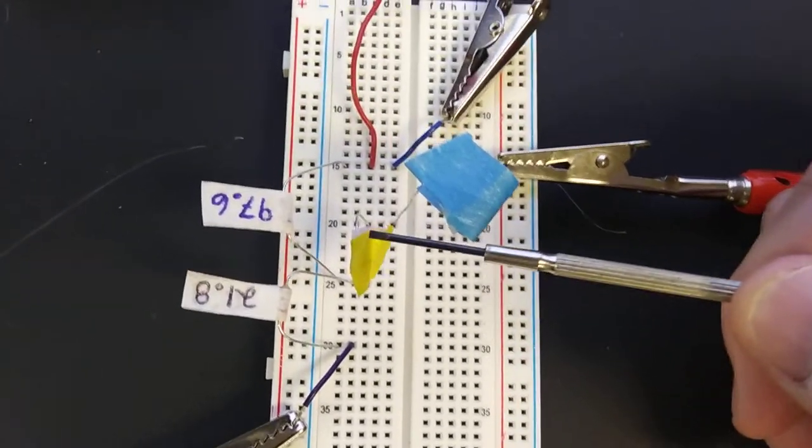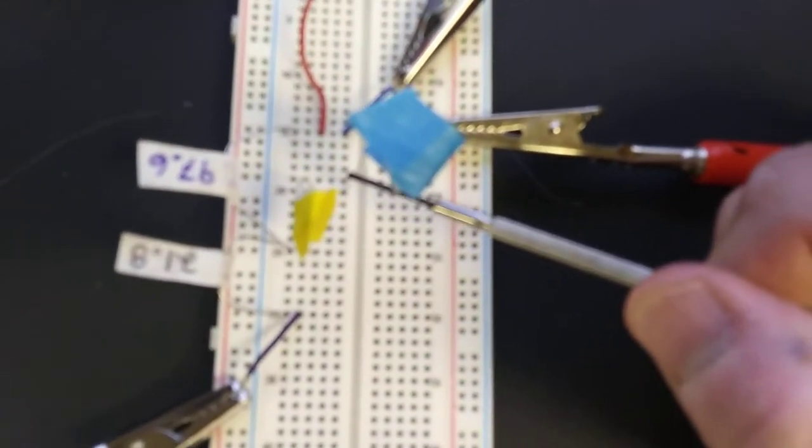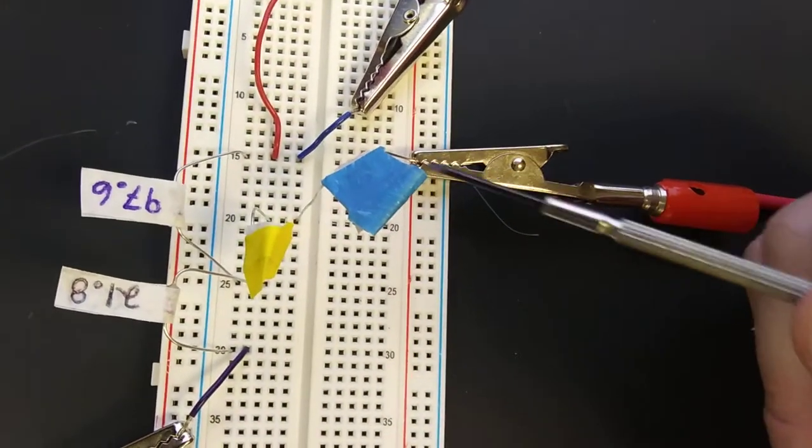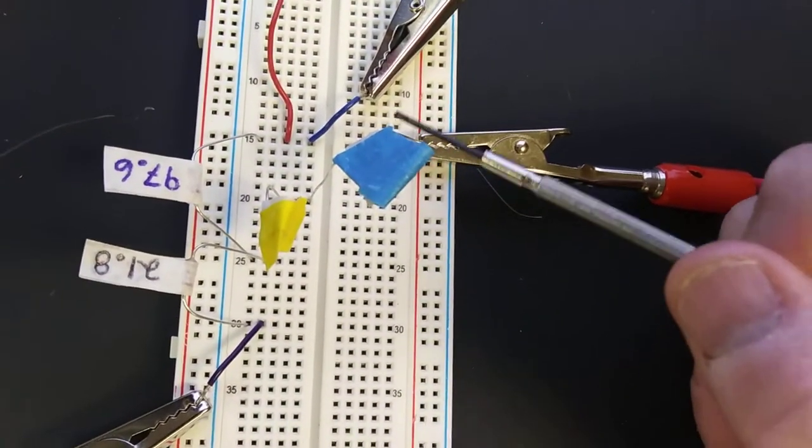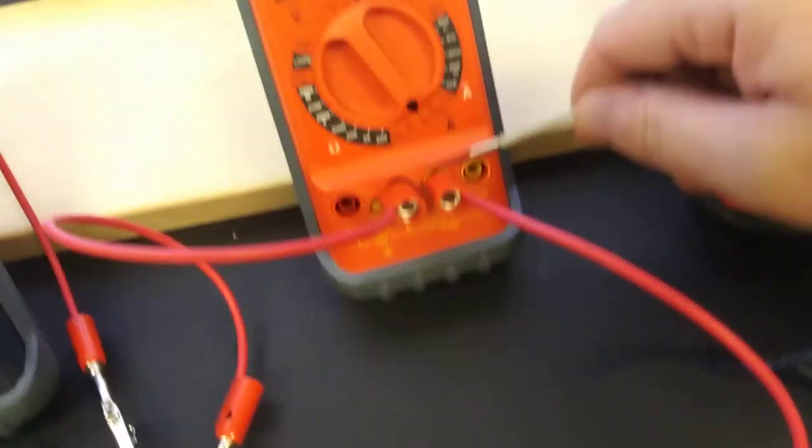This yellow resistor here comes to line 20. From line 20 it goes right here to this blue resistor. Sorry for that tape falling off there. And then the other leg of that comes right here into this DMM.